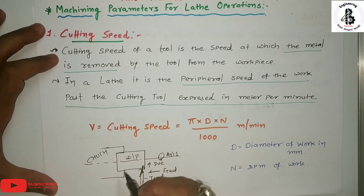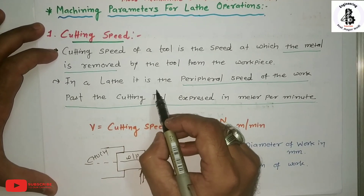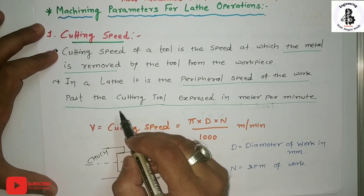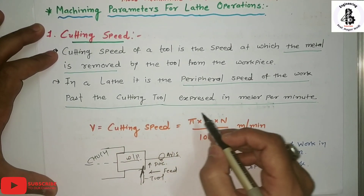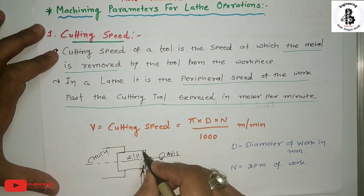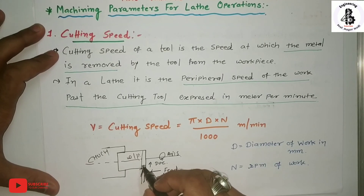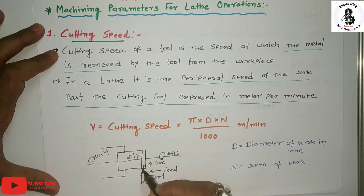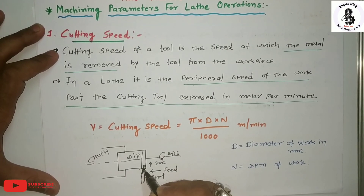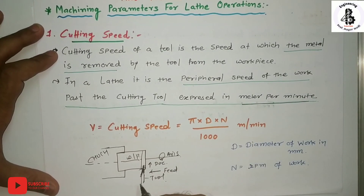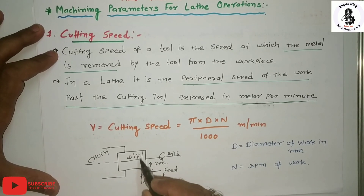In case of the lathe, it is the peripheral speed of the workpiece passing the cutting tool, expressed in meters per minute. In simple terms, that is the peripheral speed of the workpiece passing the cutting tool — how much material passes through the cutting edge in terms of meters per minute. That is called cutting speed, and it depends upon the rotation of that particular component and its diameter.